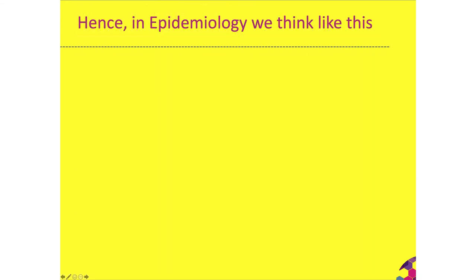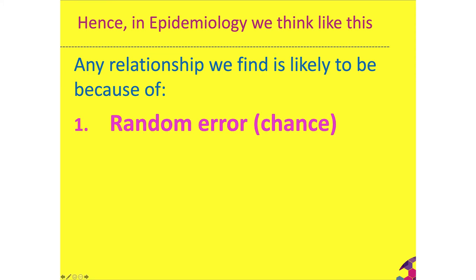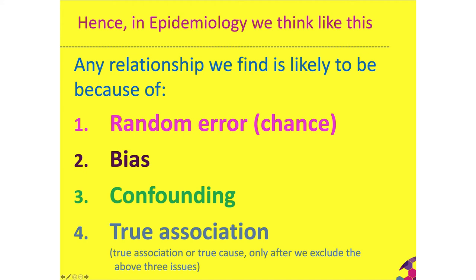In epidemiology we think like this: any relationship we find in an epidemiological study — ecological, cross-sectional, cohort, case-control, or randomised trial — is first of all likely to be due to random error, or because of bias in how we did the study, or because of a confounding third factor that was creating the health outcome while the exposure was simply present at the same time. Only if we can rule out random error, bias, and confounding are we likely to have a true association between an exposure and a health outcome.